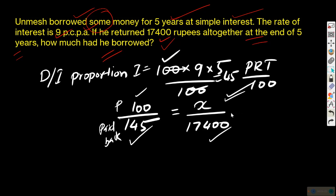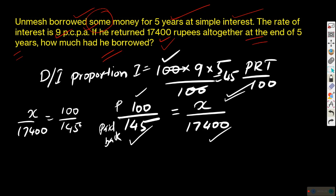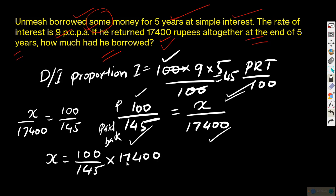If 100 rupees was borrowed for 5 years at 9% per annum, we apply the formula PRT upon 100: interest equals 100 into 9 into 5 upon 100, which equals 45 rupees. So if 100 rupees was borrowed, you pay back 100 plus 45 equals 145 rupees. This means: if the principal is 100, the money paid back is 145. Using proportion, if X is the principal and 17,400 is paid back, we can find X.